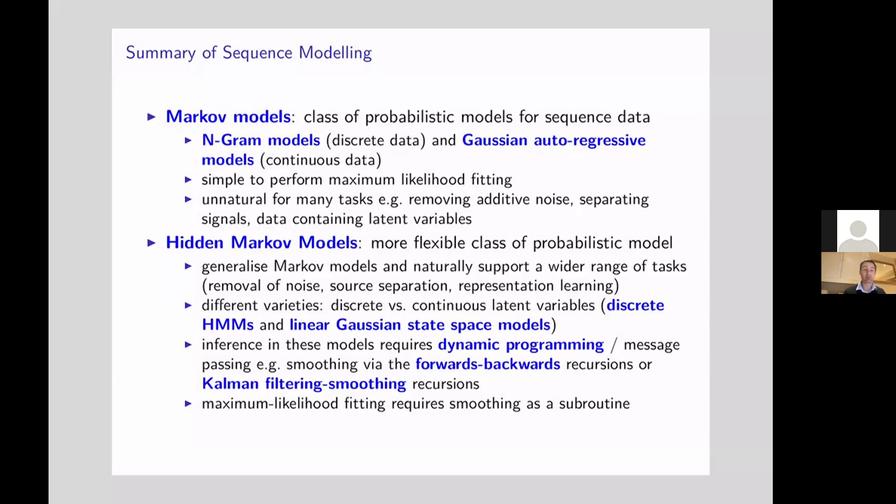these being a really pervasive type of probabilistic model that's used for sequence data. The models observe data directly, and we looked at two different varieties of Markov model: N-gram models where observed data are discrete, and Gaussian autoregressive models for continuous data.